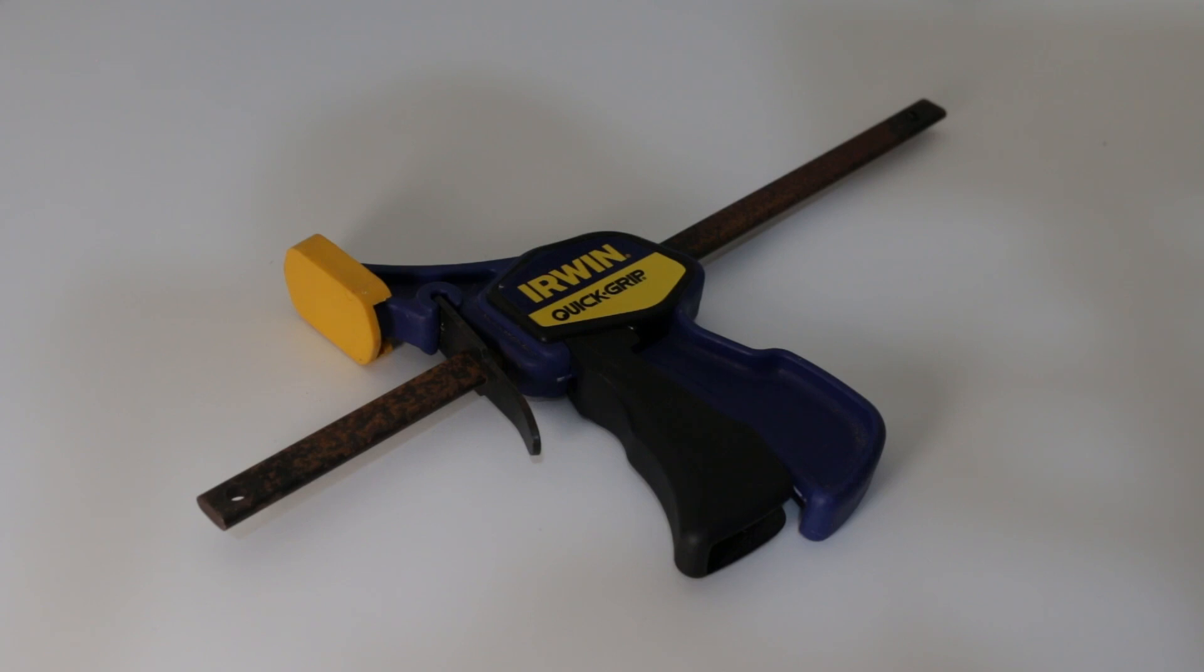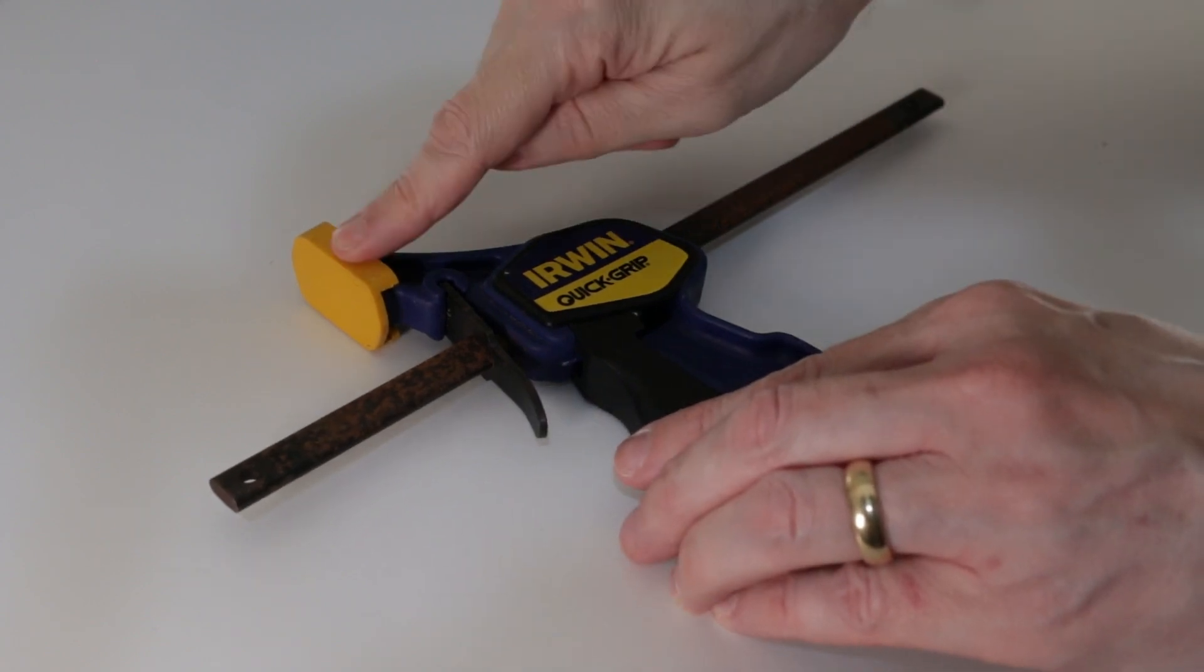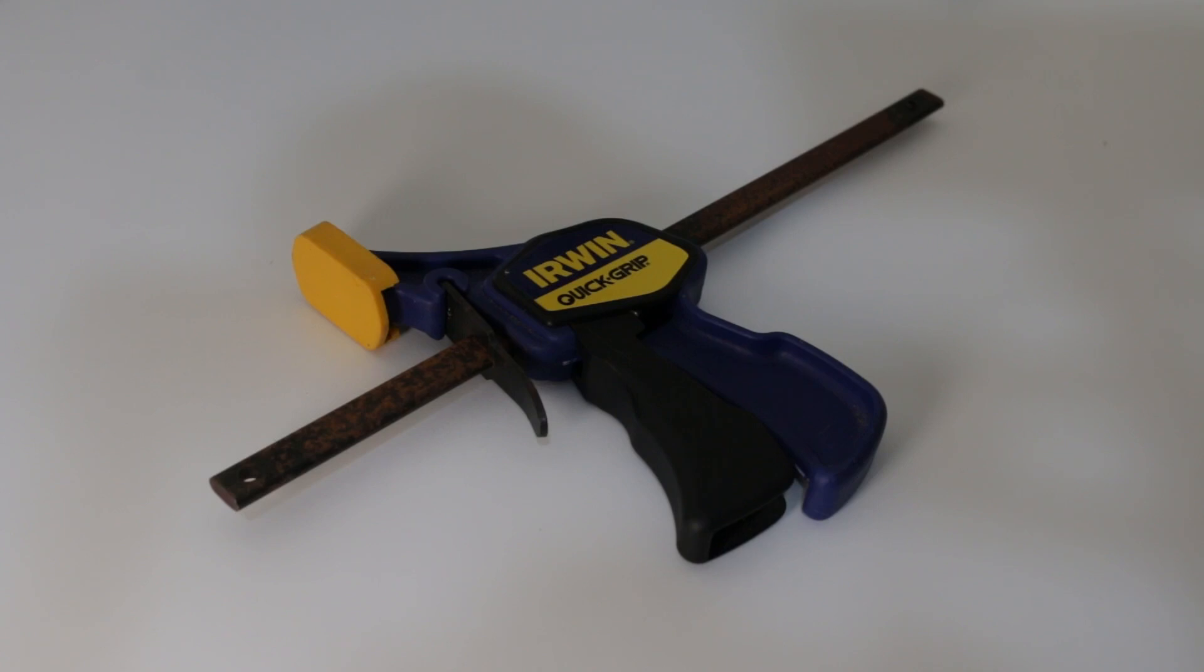So the starting point we're going to have these Irwin clamps, standard, no changes to the trigger mechanism. We've still got the hole drilled in the end for an M5 bolt, and let's see what kind of improvements we can make.